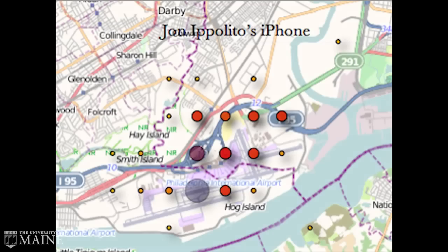We unconsciously leave a wake of digital records around us as we go about our day — location and camera information stored in our photographs, GPS signatures captured by our mobile phones every few minutes, cookies deposited on our hard drive as we browse from website to website.